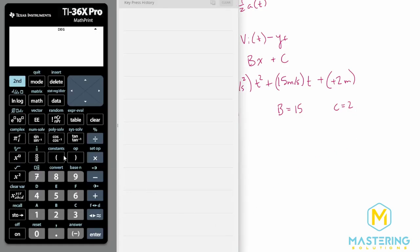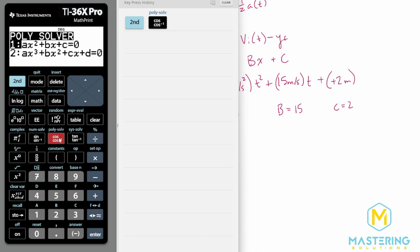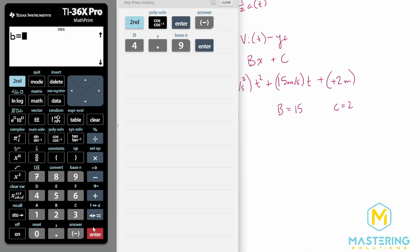When we come to the calculator, we go to second poly solver. There we are, a x squared plus b x plus c. Our a is negative 4.9, b is 15, and c is two. That gives us x values of 3.2 rounded, and negative 0.13.